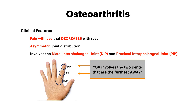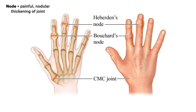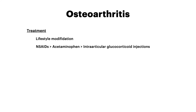Also look for Heberden's nodes and Bouchard's nodes — nodular thickening of the joints in the hand. Heberden's node occurs at the DIP, Bouchard's node at the PIP. Treatment for osteoarthritis: first and foremost, lifestyle modification. If using pharmacotherapy, you would use NSAIDs, then acetaminophen, and in some rare cases, intra-articular glucocorticoid injections.